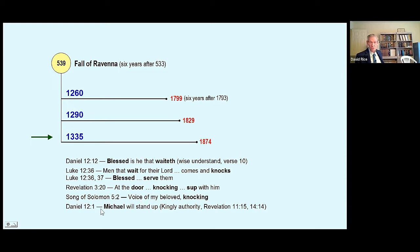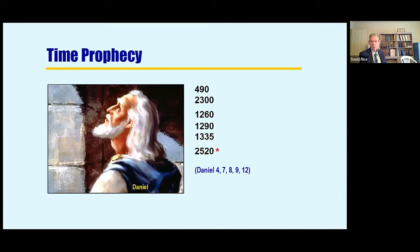Song of Solomon chapter 5 verse 2. I hear the voice of my beloved. He's knocking at the door. That's the way it is with those spirit begotten at the end of the age, if they're attending. Finally, Daniel 12:1, which is where Daniel 12 began, told us Michael would stand up with kingly authority. And now in the very last verse of this chapter, we find that would be at the end of 1,335 days in 1874. So we have a pretty good foundation when you put it all together for the year of our Lord's return.